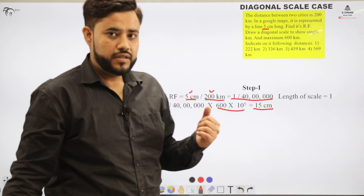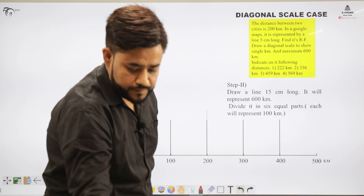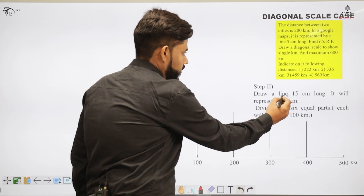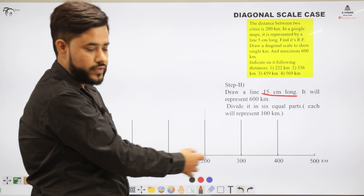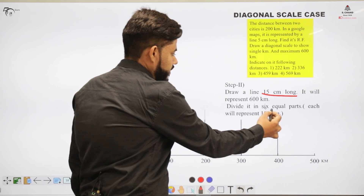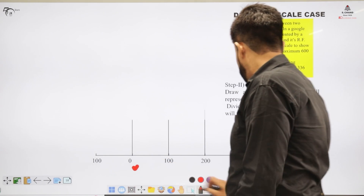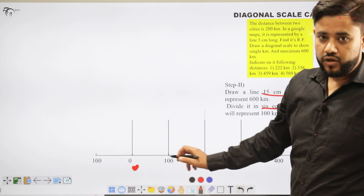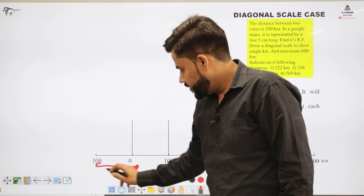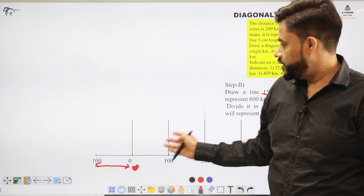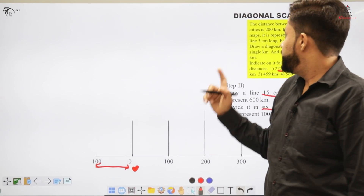Proceeding in the same manner as the previous video, the first step is to draw a line 15 centimeters long. I have prepared that 15 cm line and divided it into 6 equal parts. From 0 to 500, this represents the distance in kilometers — so 0 to 500 is the 500-kilometer distance. To read two decimal places, we will use the diagonal scale for further subdivision.